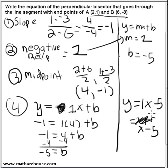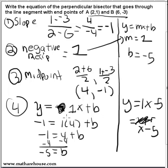Let's recap what we did. Our goal is to get an equation in slope-intercept form, so we need the slope and the y-intercept. Calculate the slope of the original segment, then take its negative reciprocal — that will be the slope of the perpendicular bisector, since perpendicular lines have slopes that are negative reciprocals. Calculate the midpoint to get a point on the new line, substitute x and y into the equation, and solve for b. To double-check, substitute the midpoint back in — if you put 4 in for x, you should get -1, and indeed you do.